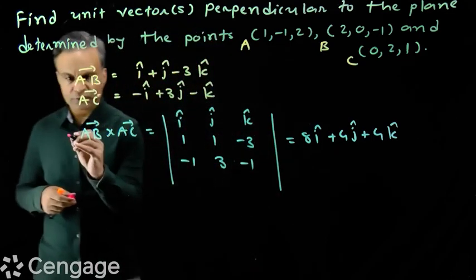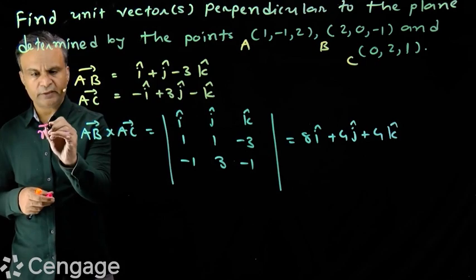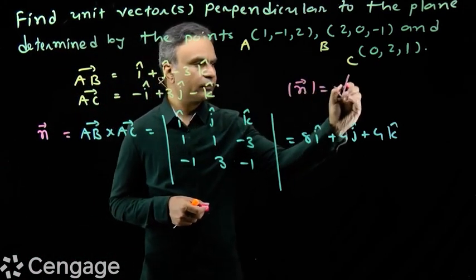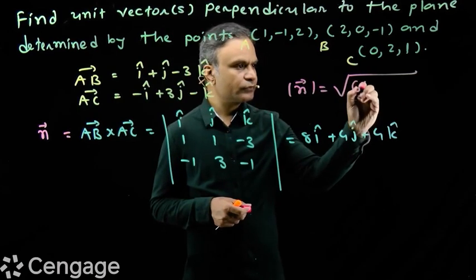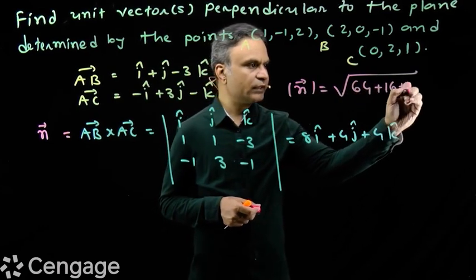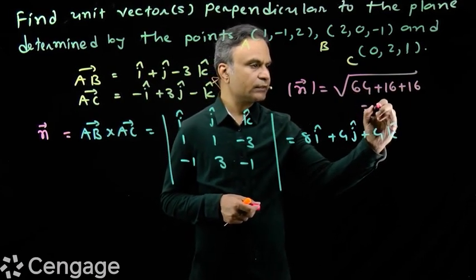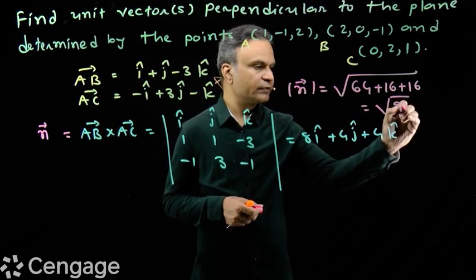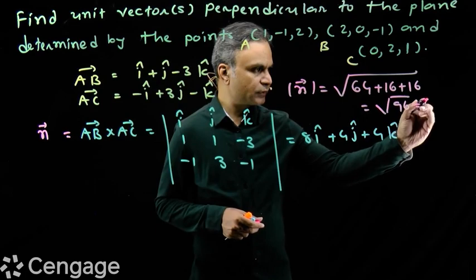Suppose this is vector n. Then modulus of vector n will be square root of 64 plus 16 plus 16, which is √96, and this is 4√6.